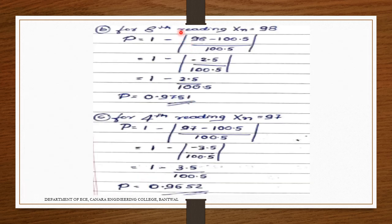For the 8th reading, x_n = 98. Precision: p = 1 minus |98 minus 100.5| / 100.5 = 1 minus 2.5/100.5. The minus sign is ignored (mod). So p = (100.5 minus 2.5)/100.5 = 98/100.5 = 0.9751. This means 97.51% precision.